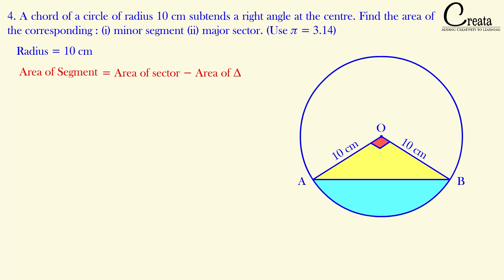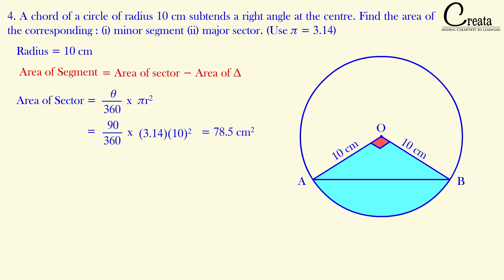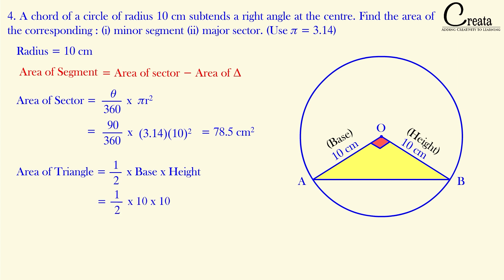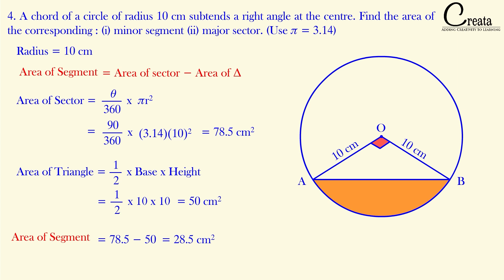Firstly, let's find the area of the sector using (theta / 360) × π r², with theta = 90° and radius = 10 cm. We got the area of the sector. Now for the triangle — it is a right-angle triangle with angle O = 90°. Using area = ½ × base × height, where base = height = 10 cm, area of triangle = ½ × 10 × 10 = 50 cm². Area of minor segment = area of sector minus area of triangle = 28.5 cm².